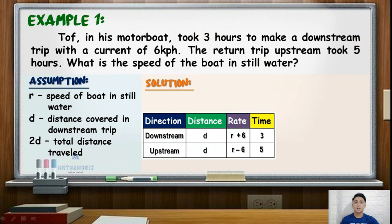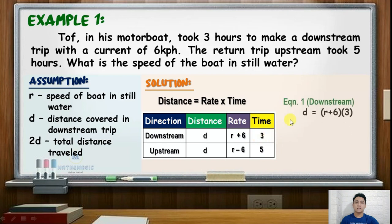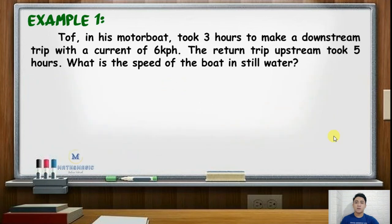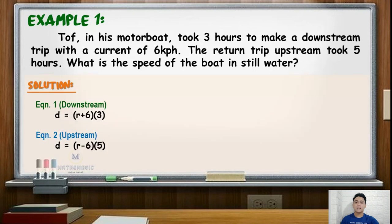After this, we will construct two equations. Following the formula D equals RT, for the distance downstream it will be quantity R plus 6 times 3, and for upstream it will be quantity R minus 6 times 5. Simplifying using the distributive property, for downstream D equals 3R plus 18, and for upstream D equals 5R minus 30.